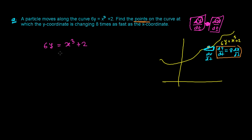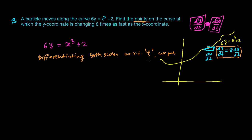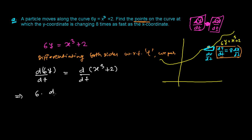For that, let's first differentiate both sides with respect to time so that we can get the rates. Differentiating both sides with respect to T, we get the derivative of 6Y with respect to time and the derivative of X cubed plus 2 with respect to time. The derivative of 6Y gives 6 dy/dt, since 6 is a constant. The derivative of X cubed gives 3X squared dx/dt, and the derivative of 2 is 0.